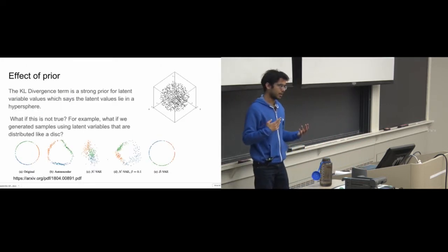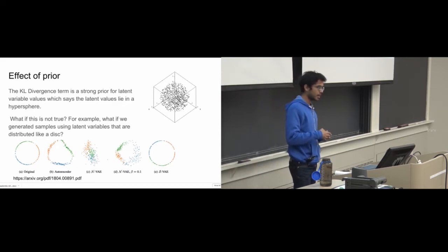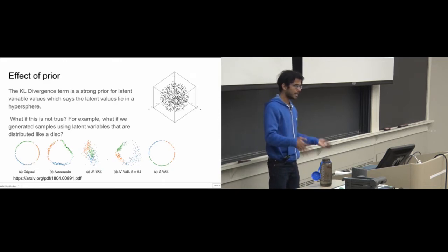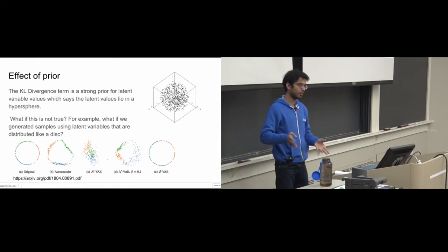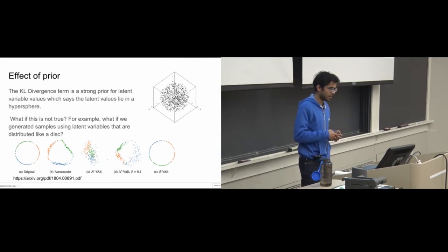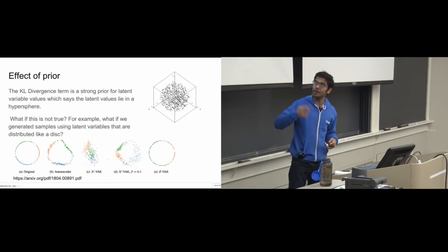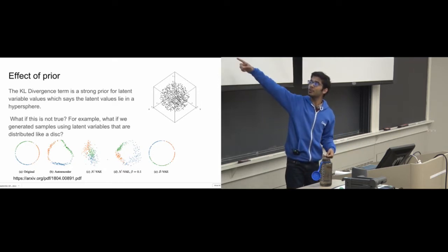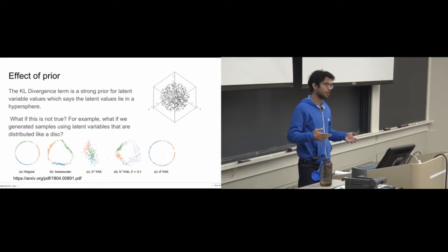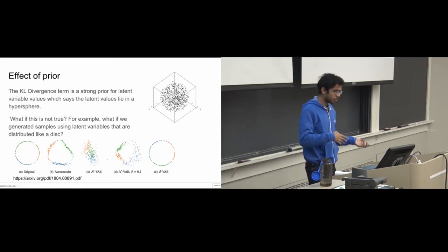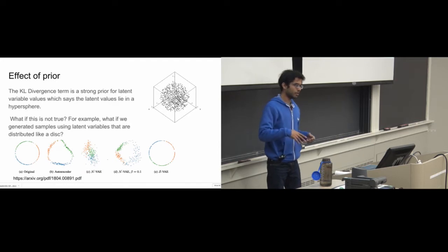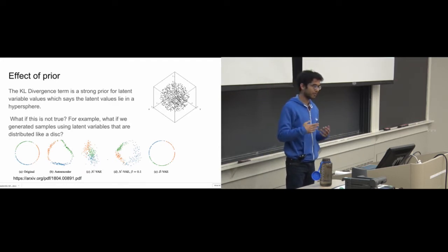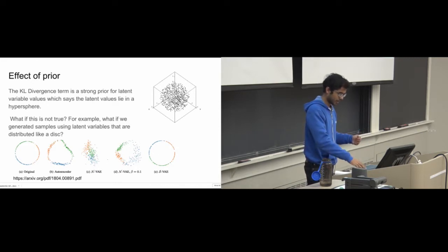Two things to highlight from current research: the KL divergence term is a strong prior for the latent variable values, saying your latent values lie in a certain hypersphere. But what if this isn't actually true? If we generate samples using a normal VAE, we might get latent variables learned in an undesirable way. You can either reduce reliance on the KL divergence term using beta equals 0 or 0.1, multiplying it by that factor, or use a different prior — for example, the spherical VAE paper uses the von Mises-Fischer distribution as the underlying prior.